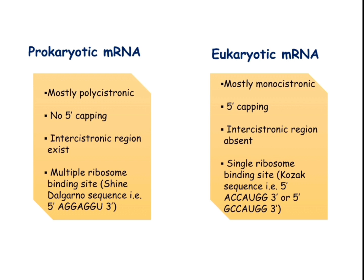In prokaryotic mRNA there is no 5' capping, whereas in eukaryotic mRNA there is 5' capping. In prokaryotic mRNA, intercystronic regions exist, but in eukaryotic mRNA there is no intercystronic region. Importantly, in prokaryotic organisms multiple ribosomes can bind on a single mRNA. The ribosome binding site in prokaryotes is called the Shine-Dalgarno sequence, with the consensus sequence AGG or AGGU, which is recognized by the 16S rRNA part of the ribosome.